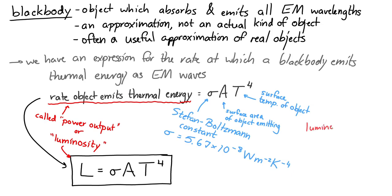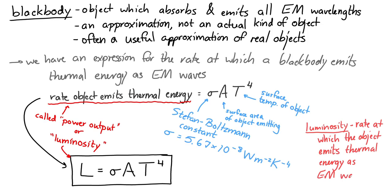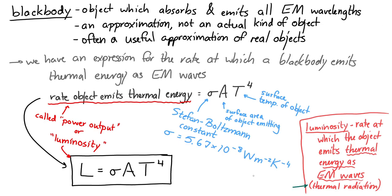L is the luminosity — it's the rate at which the object emits thermal energy as electromagnetic waves. That thermal energy emitted as electromagnetic waves is often called thermal radiation. I want to be specific: that's different from nuclear radiation — the alpha, beta, and gamma radiation we'll see in nuclear physics. Here we're talking about thermal radiation, which is electromagnetic waves given off by an object with some temperature.